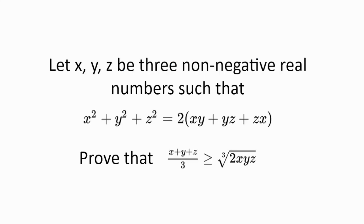Let x, y, and z be three non-negative real numbers such that x² + y² + z² = 2(xy + yz + zx). Prove that (x + y + z)/3 ≥ ∛(2xyz).